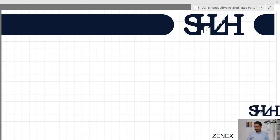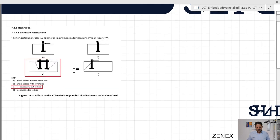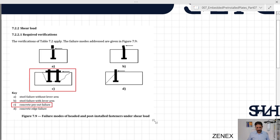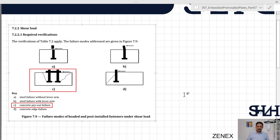Just to recap what we need to do, let's go through the given instruction for the shear loads. We checked part A which is steel failure without lever arm, part B is not applied to our case.